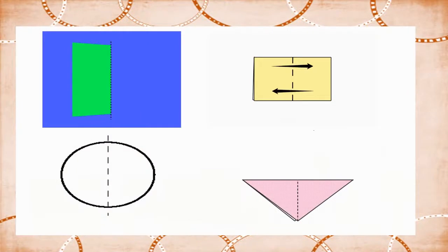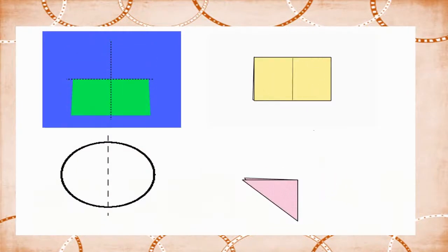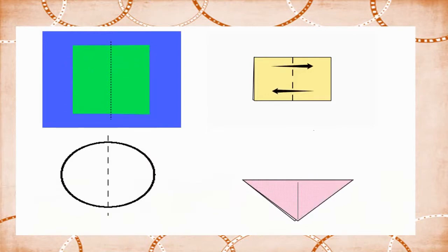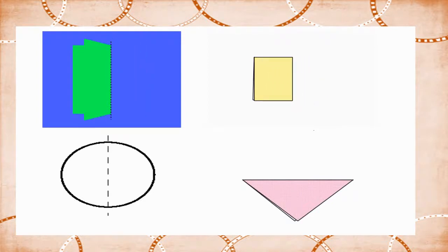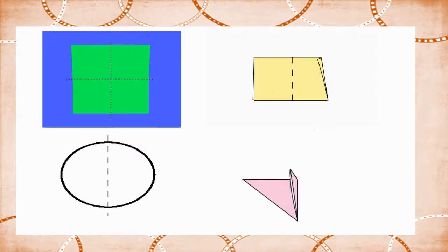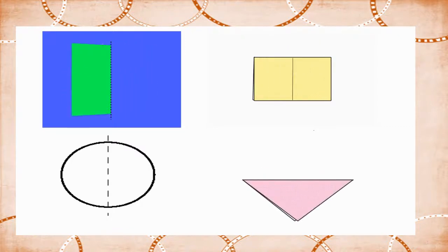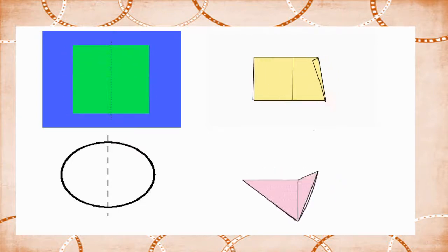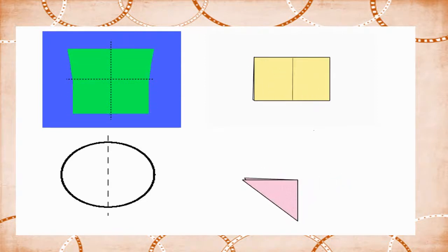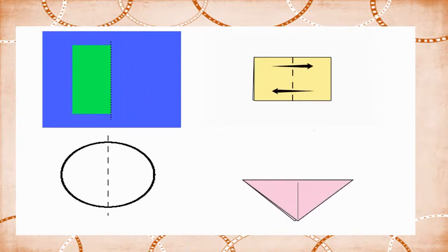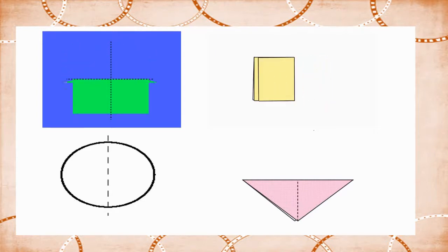Children, now look at these geometrical shapes. If the two parts of a figure made by a line fall exactly on one another, then the figure is said to be symmetrical about that line. The fold along the dotted line in the square, the rectangle, the circle, and the triangle divides each into two parts which fall exactly on one another. The square, the rectangle, the circle, and the triangle are symmetrical with respect to this line.